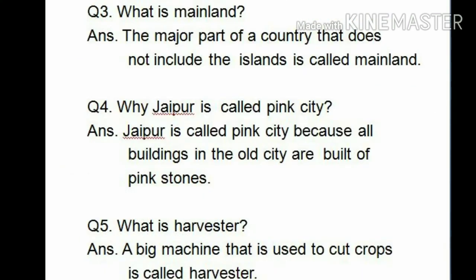Number 3: What is mainland? Answer: The major part of a country that does not include the islands is called mainland. Number 4: Why is Jaipur called the Pink City? Answer: Jaipur is called the Pink City because all buildings in the old city are built of pink stones.